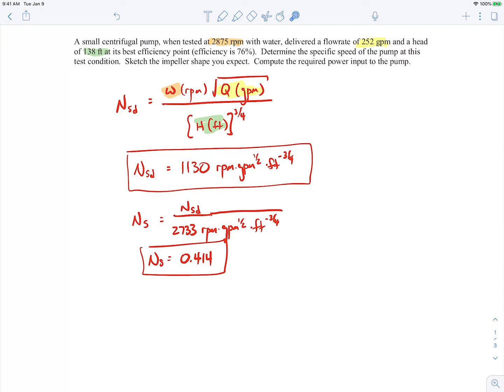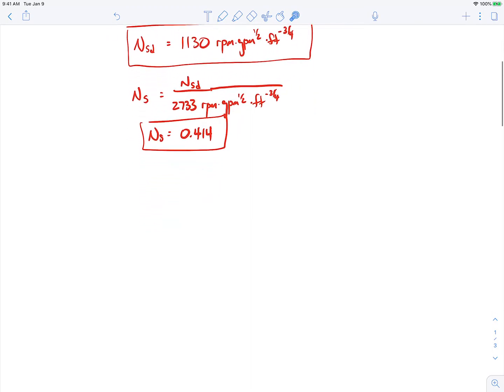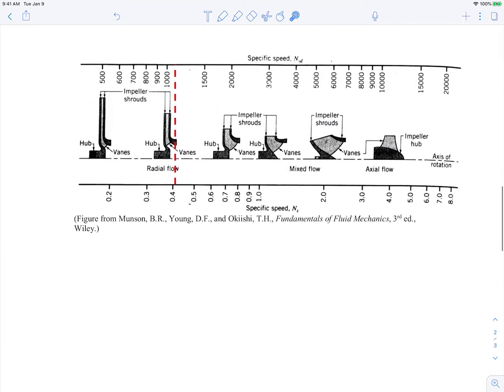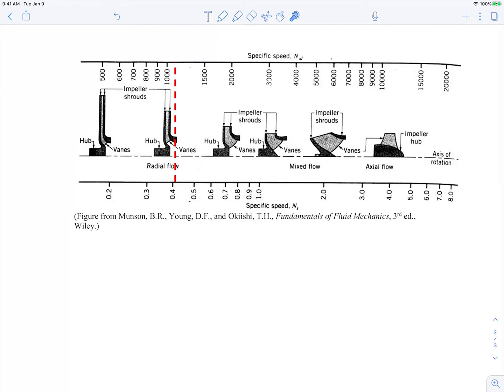What we do with that dimensionless specific speed is it'll tell us what general class of impellers or pumps will be most efficient for our particular application. If we go to a plot, just remember these numbers: 1130 and 0.414. We can go to a plot showing the type of pump impellers that are most efficient for a given specific speed. You'll see up here, this is the dimensional specific speed. We were at 1130, so right there. And this is the dimensionless specific speed. We calculated 0.414, which is right there. You can see the most efficient type of pump impeller for our given application is a radial flow impeller.